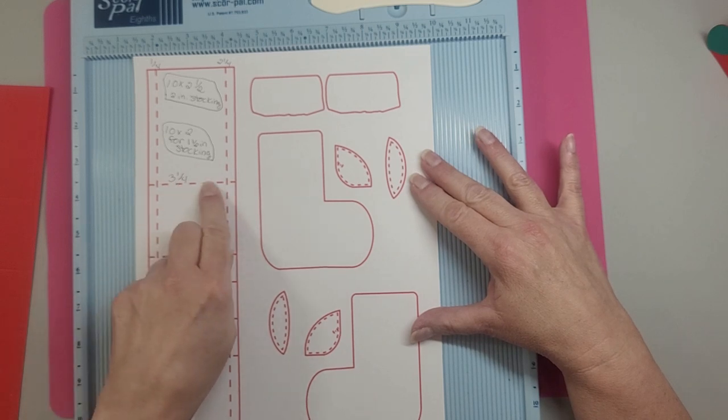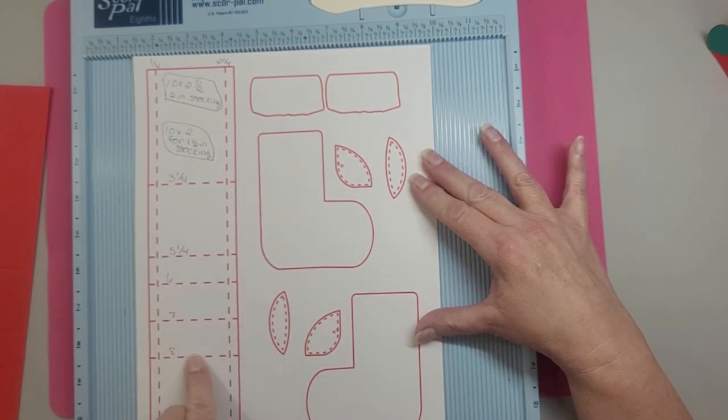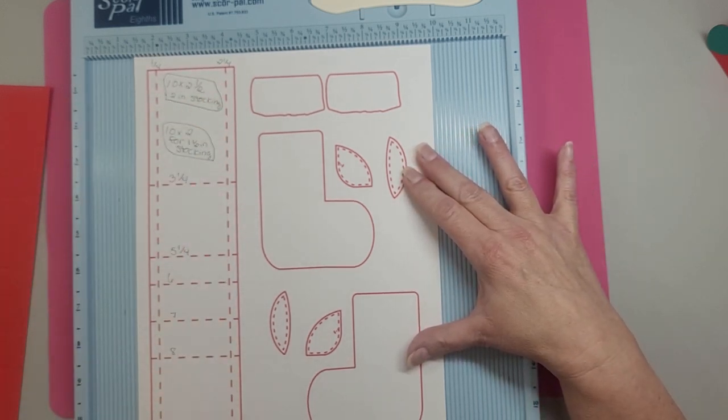You're going to score it at three and a quarter, five and a quarter, six, seven, and eight. And then down each side you're going to score at a quarter inch.